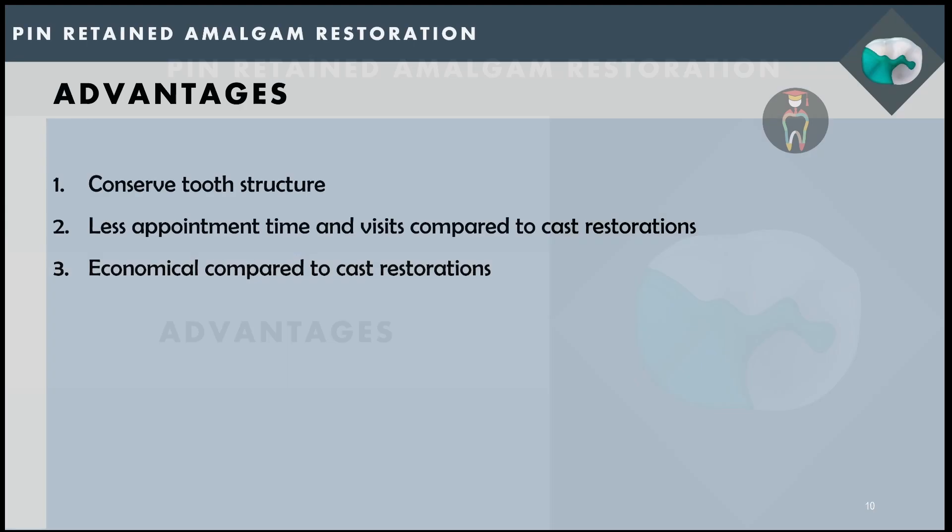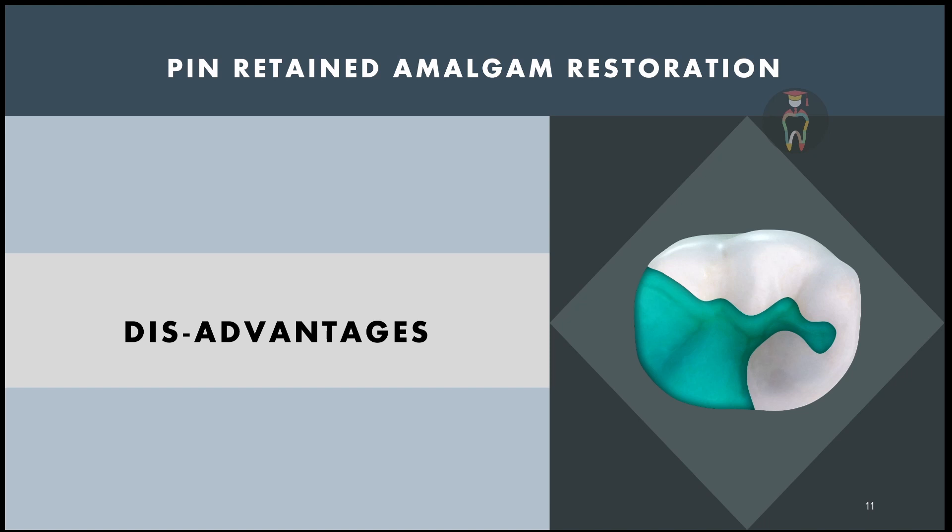Pin retained amalgam restoration has several advantages. It is a conservative tooth preparation compared to cast metal restoration, which requires more time and at least two visits. Pin retained amalgam restoration can be finished in a single visit, and it is very economical compared to cast metal restorations.